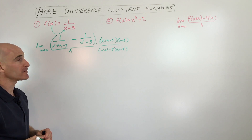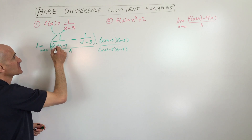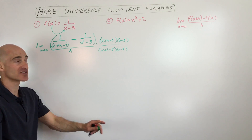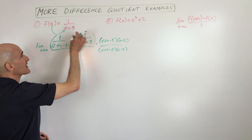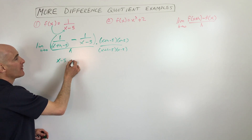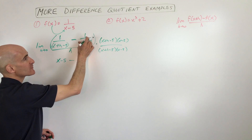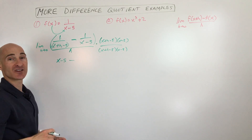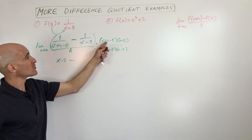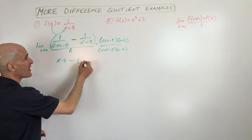I'm going to distribute this quantity to this fraction and to this fraction. When we distribute that to this fraction, the (x plus h minus 5) and the (x plus h minus 5) are going to cancel one another out. You're just going to have (x minus 5) times 1, which is (x minus 5). Then when we distribute this to the second fraction, the (x minus 5) is going to cancel out, and we're just going to have 1 times (x plus h minus 5).